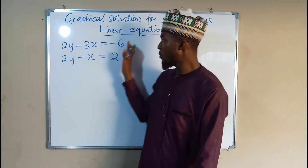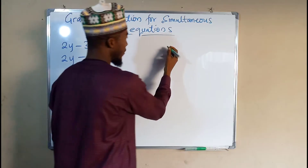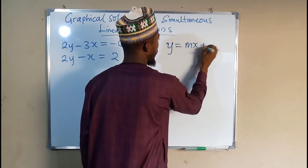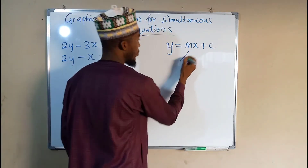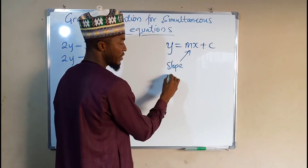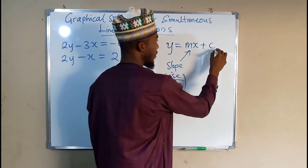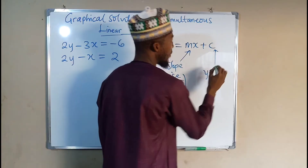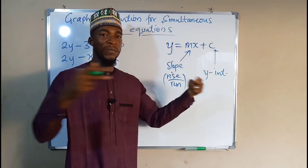First of all, let us transform each equation into slope-intercept form. A slope-intercept form is written as y equals mx plus c, where m is the slope — rise over run — and c is the y-intercept, which is the value of y where the graph touches the y-axis.